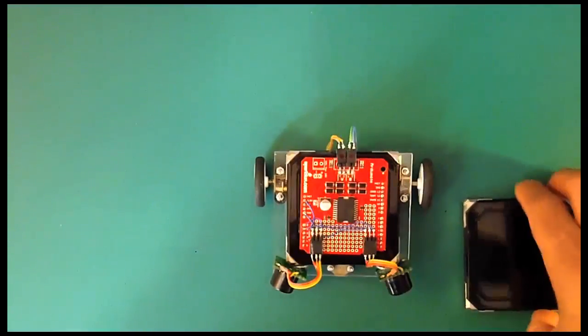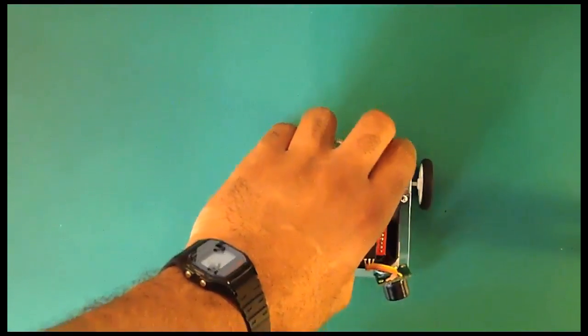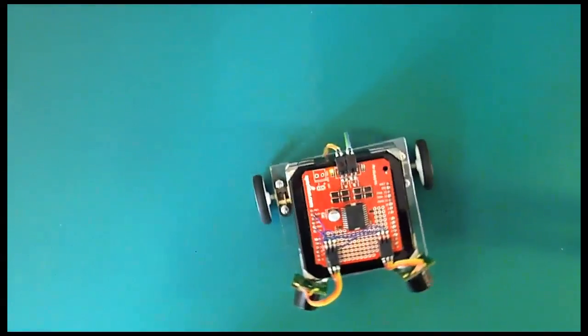Now all we have to do is place the battery square underneath the Arduino square. Everything will be powered and the robot will turn on.